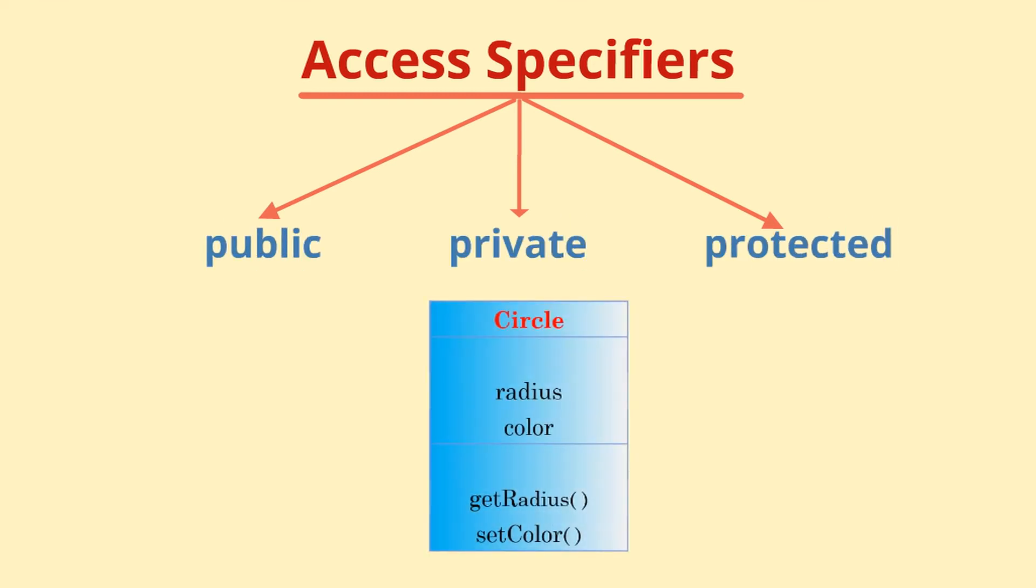For example, denoting internal data with private keyword and designating methods intended for use by code outside the class with the public keyword. This brings us to the next concept of abstraction.